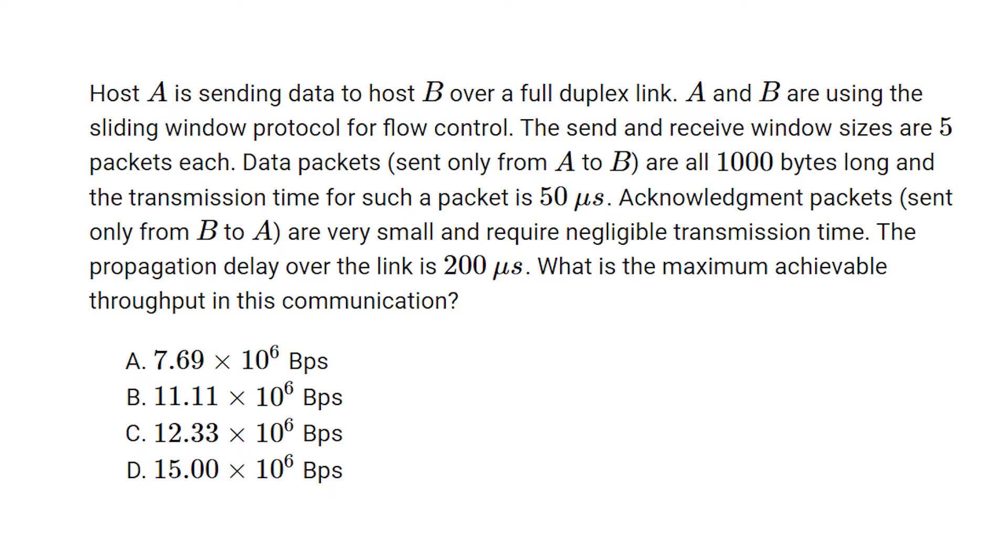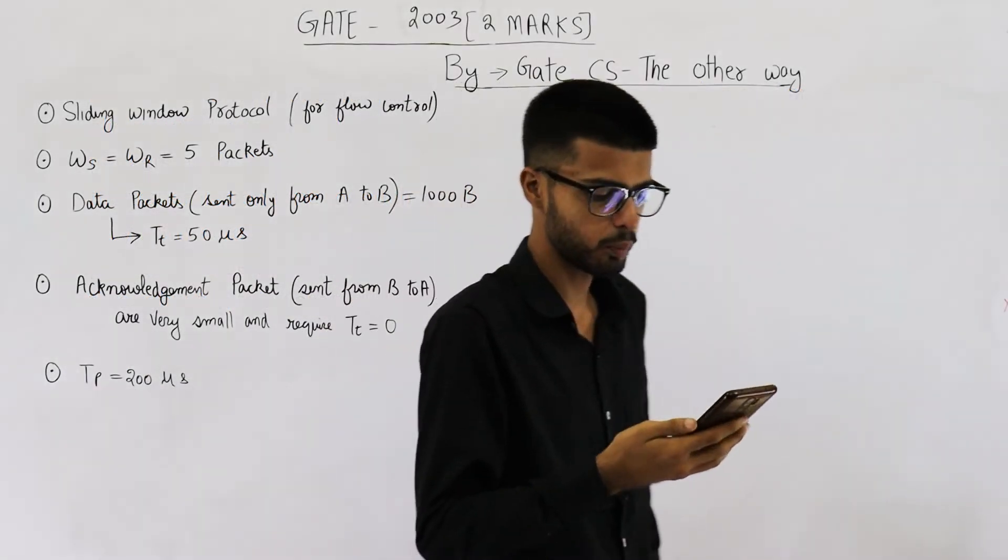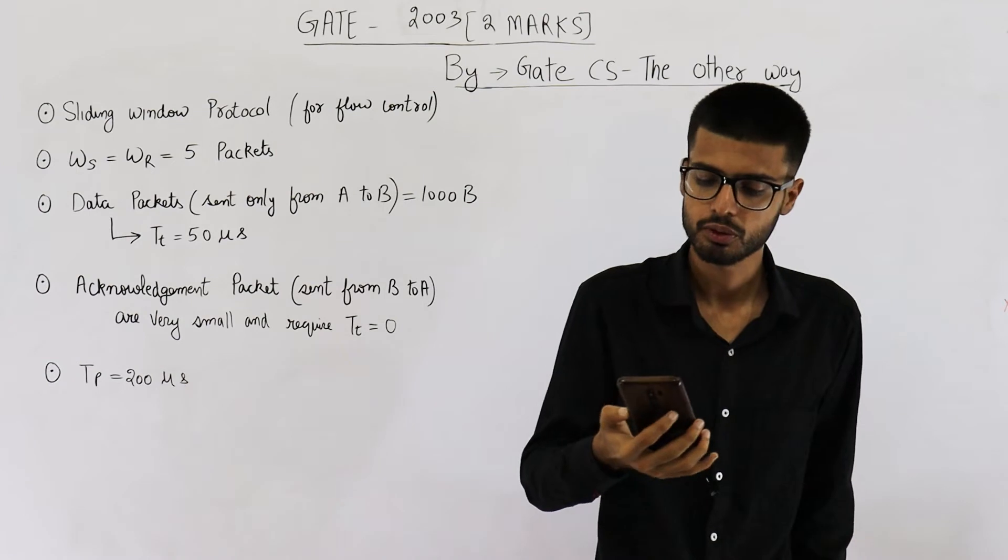Acknowledgement packets sent only from B to A are very small and require negligible transmission time. The propagation delay over the link is 200 microseconds. What is the maximum achievable throughput in this communication?